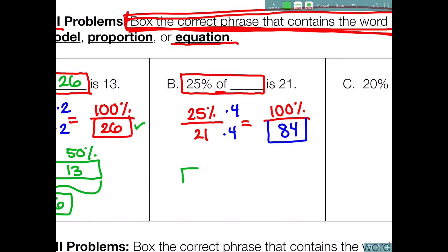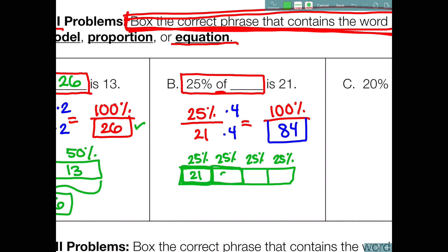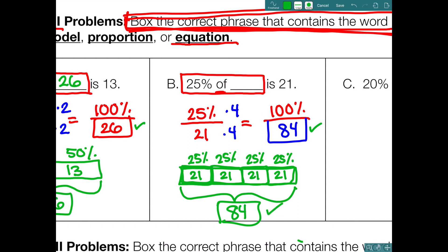Now let's check using a bar model. Here's the 100% bar broken into four 25% sections. This 25% is 21, this 25% is 21, this 25% is 21, and this 25% is 21. Looking at all 100%: 21 four times gives you 84, which matches our previous answer. So 25% of 84 is 21.